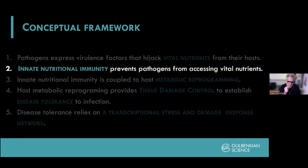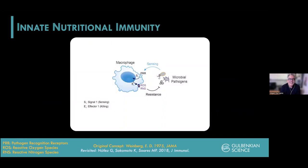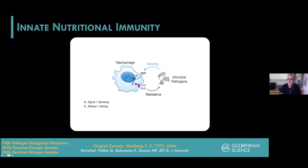This takes us to the second point: nutritional immunity. The infected host cannot be silent in the face of this robbery. The usual way we see this interaction is that innate immune cells sense the presence of microbes via pattern recognition receptors — that's signal one, the sensing. Then there's an effector function, for example the production of free radicals, reactive oxygen species or reactive nitrogen species, that provide resistance to infections. This is very evolutionarily conserved.